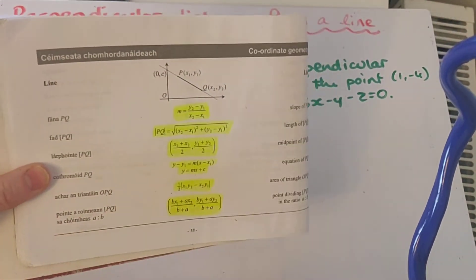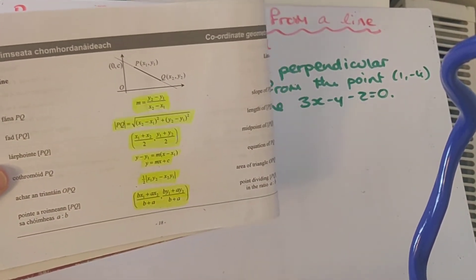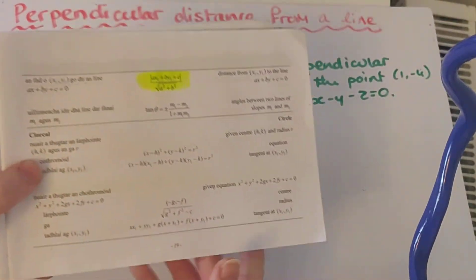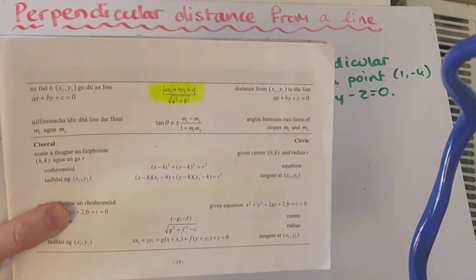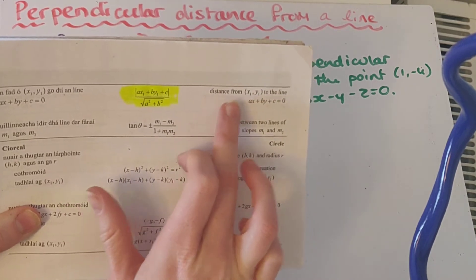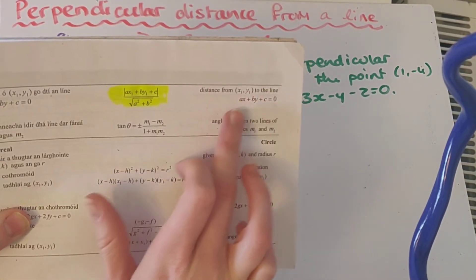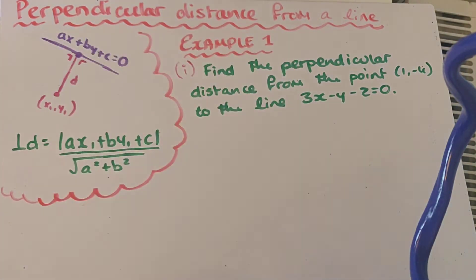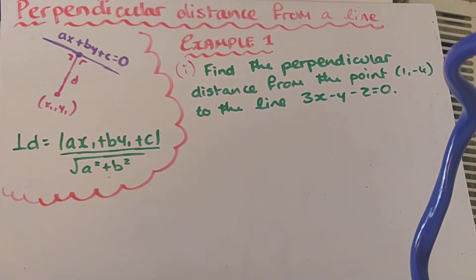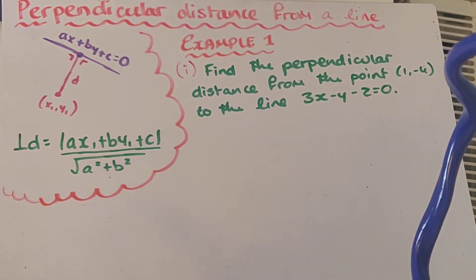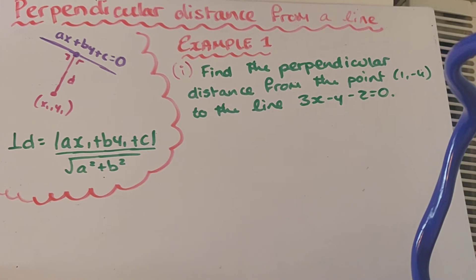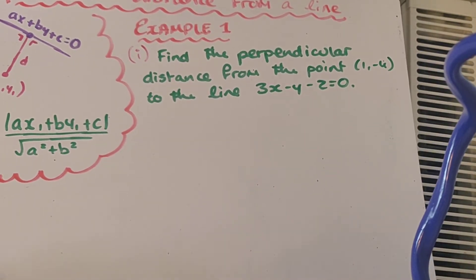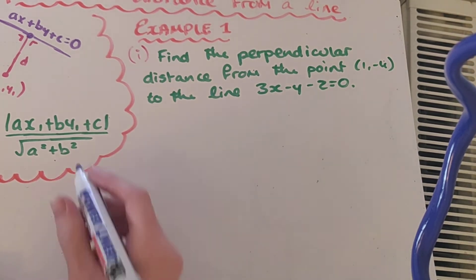So we've moved on from all the formulas we've used on page 18, though we're going to continue to use them, and we're now looking at our new formula on the top of page 19. It specifically says here the distance from x1, y1 to the line ax plus by plus c equals 0. So we're going to spend two tutorials on this formula, looking through example 1 first. Find the perpendicular distance from the point (1, -4) to the line 3x minus y minus 2 equals 0.